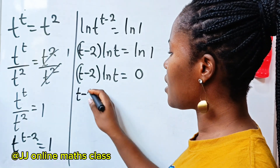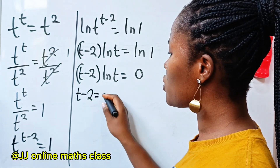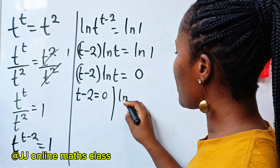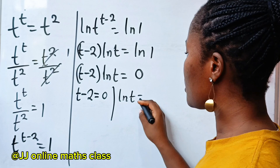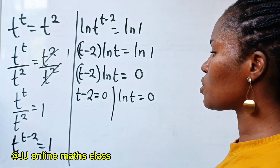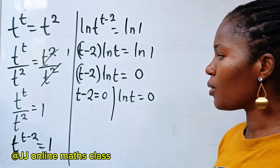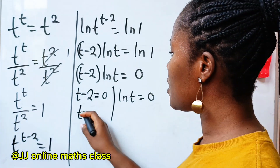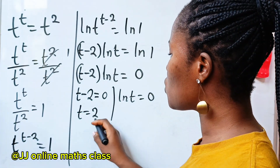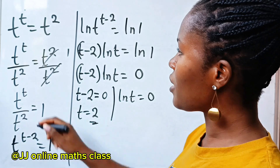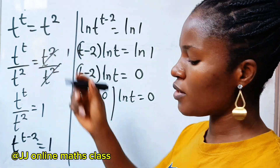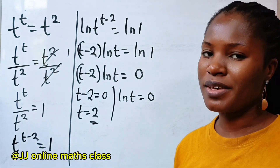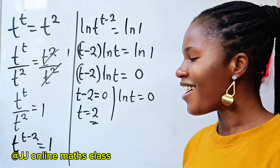From here, we can say that t minus 2 is equal to 0 or ln t is equal to 0. From t minus 2 equals 0, we get t is equal to 2 — the first solution we found by inspection.